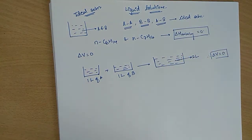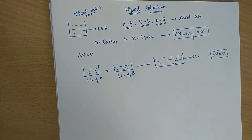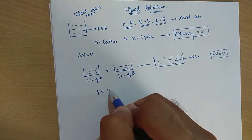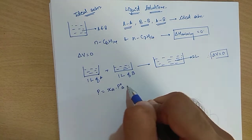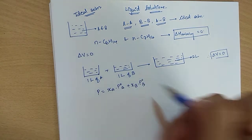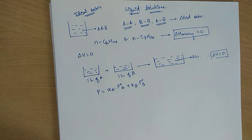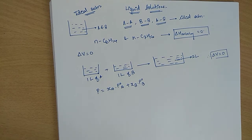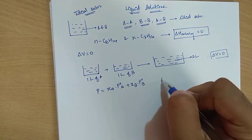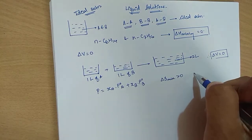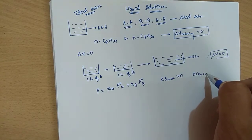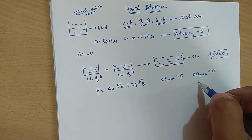These are the two important properties to remember for ideal mixtures. We will also study non-ideal solutions. For ideal solutions, Raoult's law is followed — total vapor pressure equals XA into P°A plus XB into P°B. Ideal solutions readily mix with each other, so change in entropy is greater than zero, and change in Gibbs free energy is less than zero, indicating the process is spontaneous.